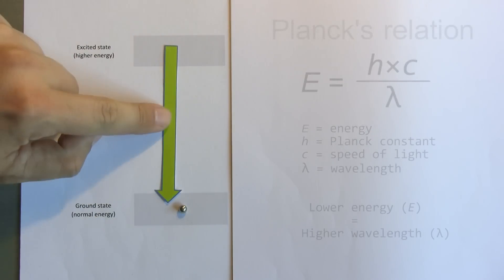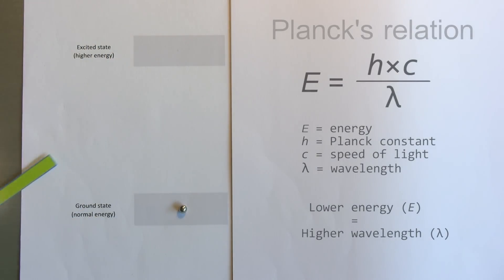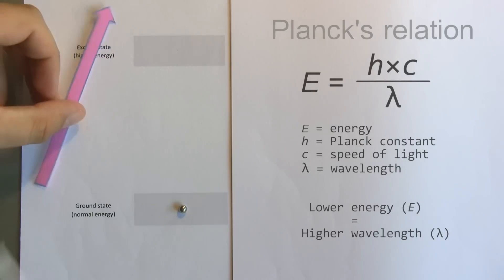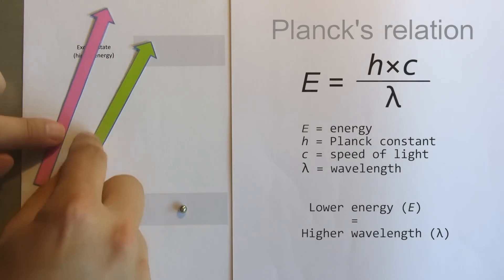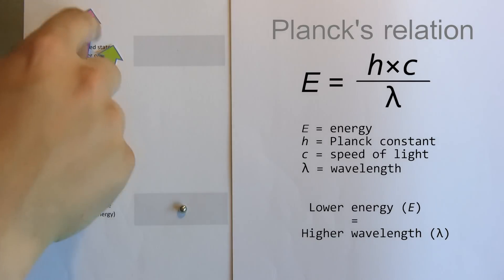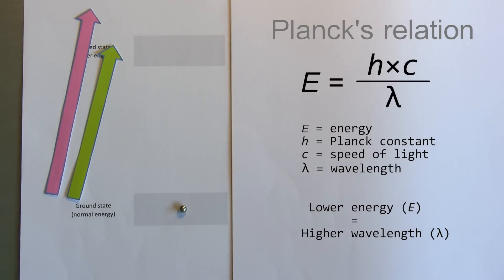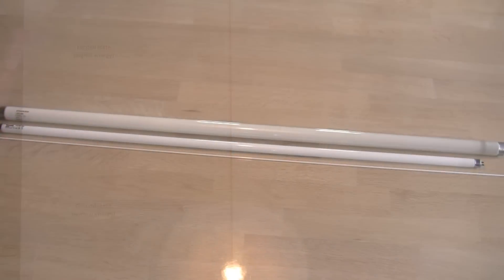So it falls back to its ground state by emitting a photon of visible light. But where did the difference in energy between the two photons go? I'll explain this later, but now for some more examples of fluorescence in our daily lives.